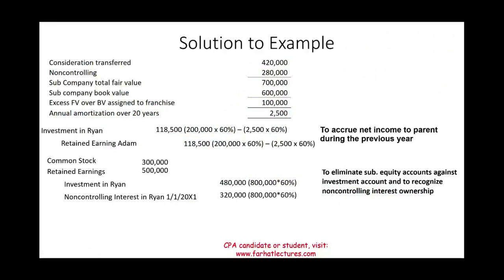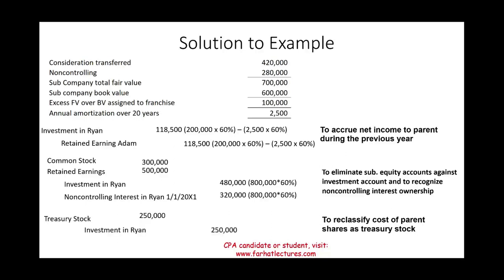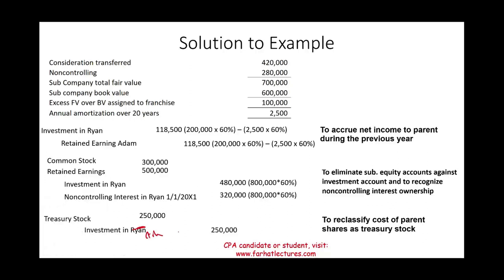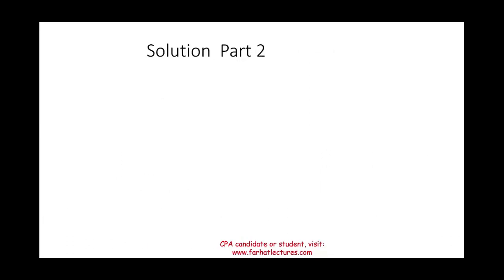Next, we reclassify the cost of parent shares as treasury stock. Ryan Company paid $250,000 to purchase 25% of Adam. During consolidation, we take that investment and reclassify it: debit Treasury Stock $250,000, credit Investment in Adam $250,000. This reclassifies Ryan's investment in Adam to treasury stock on the consolidated statements.